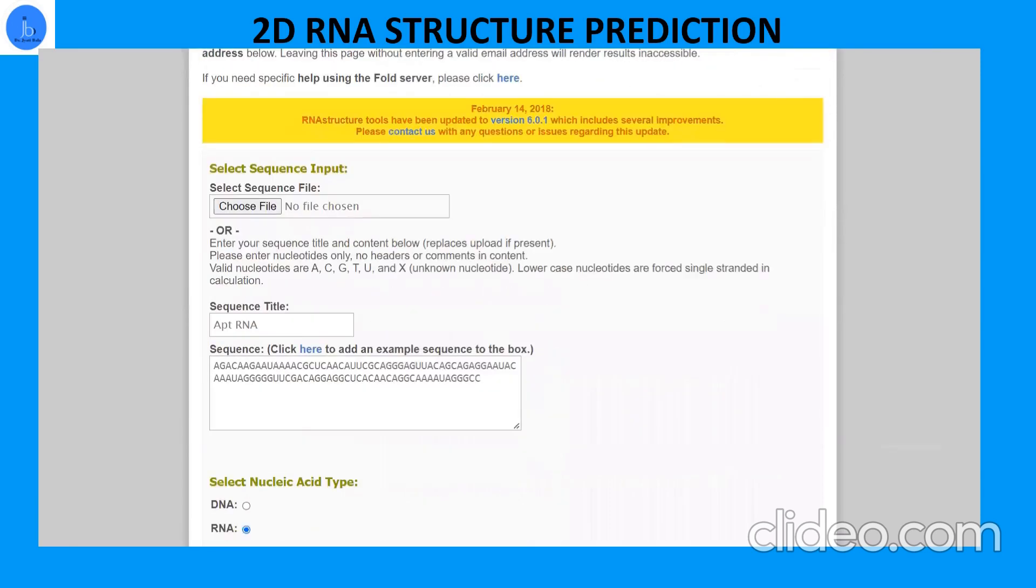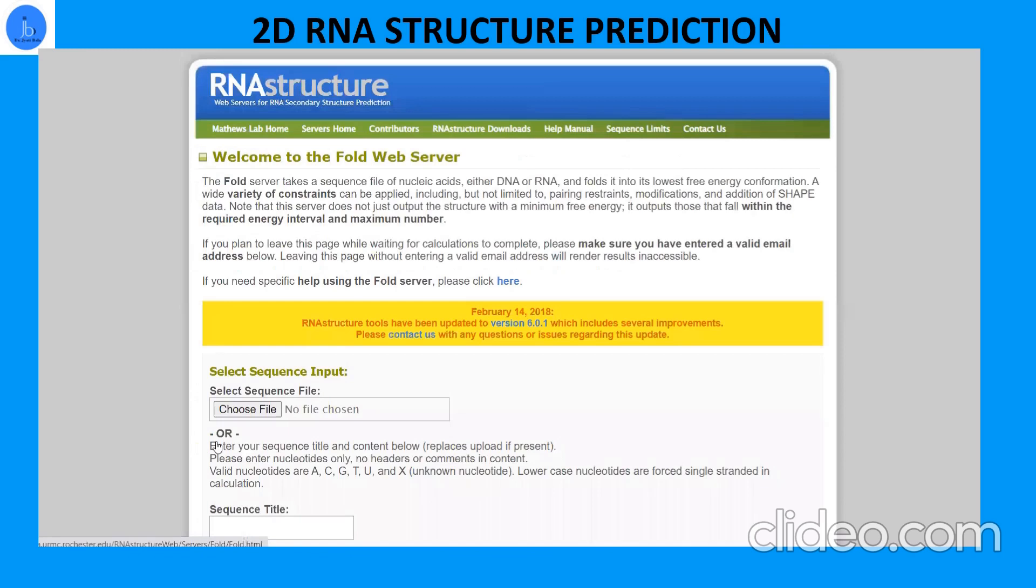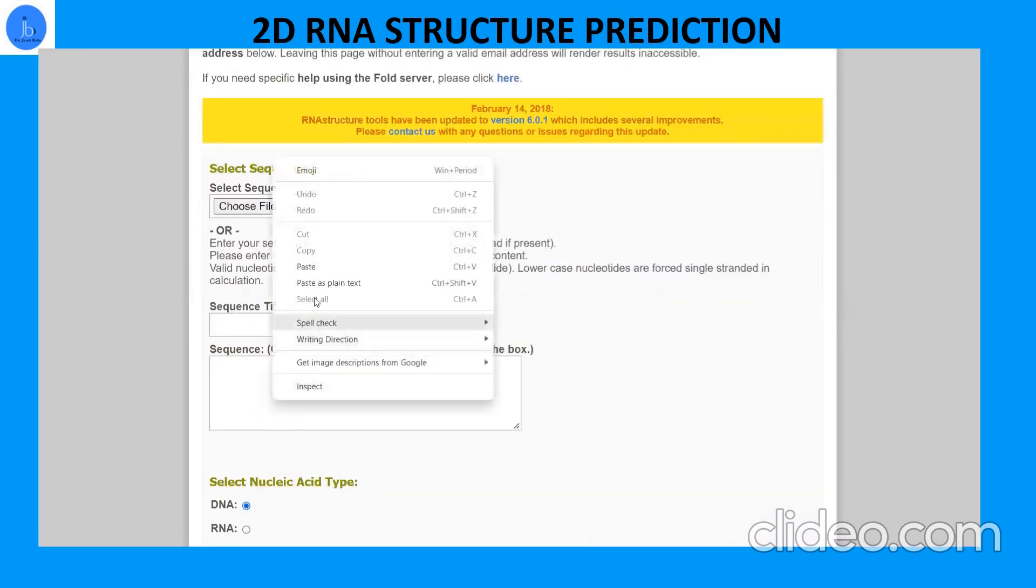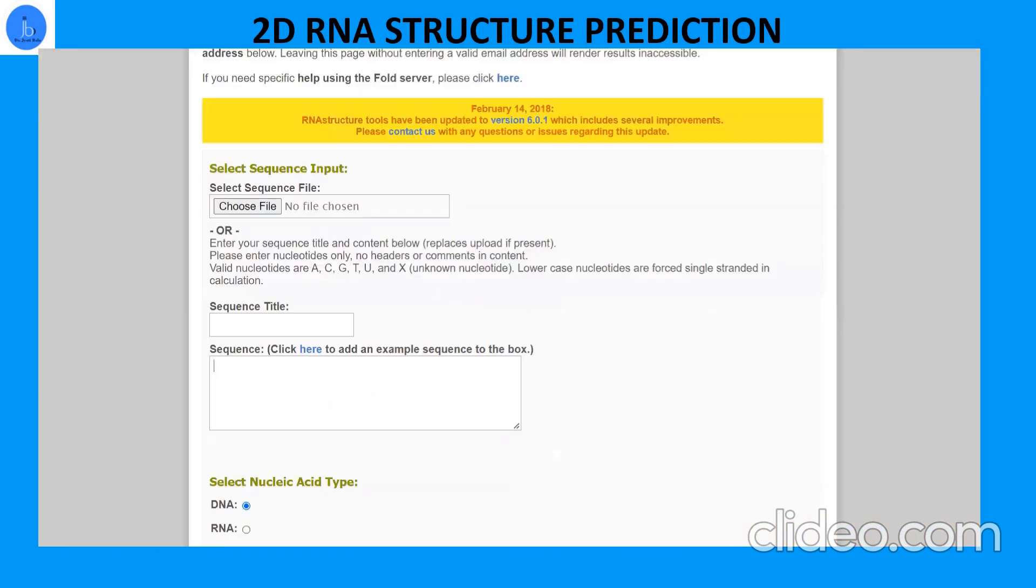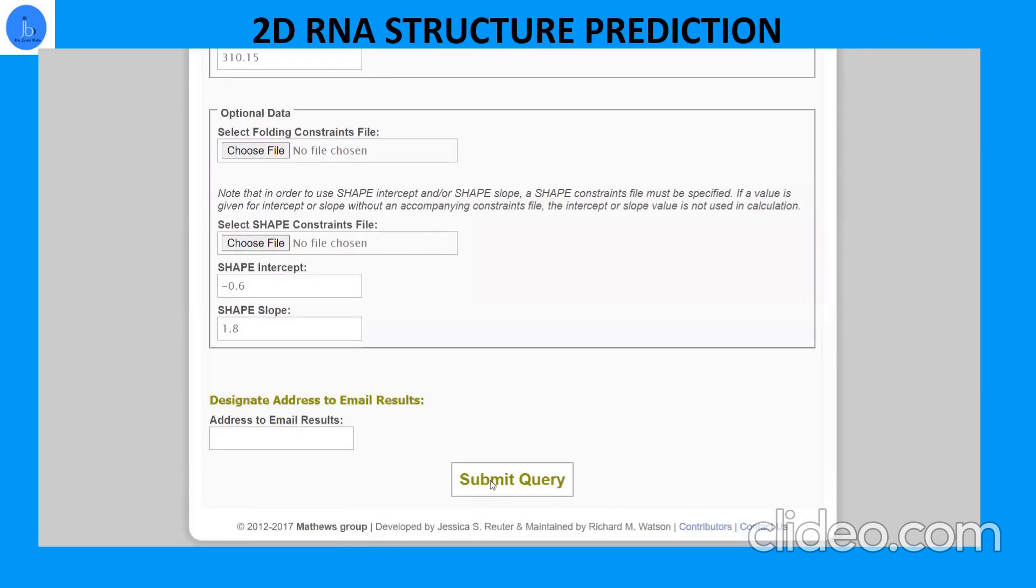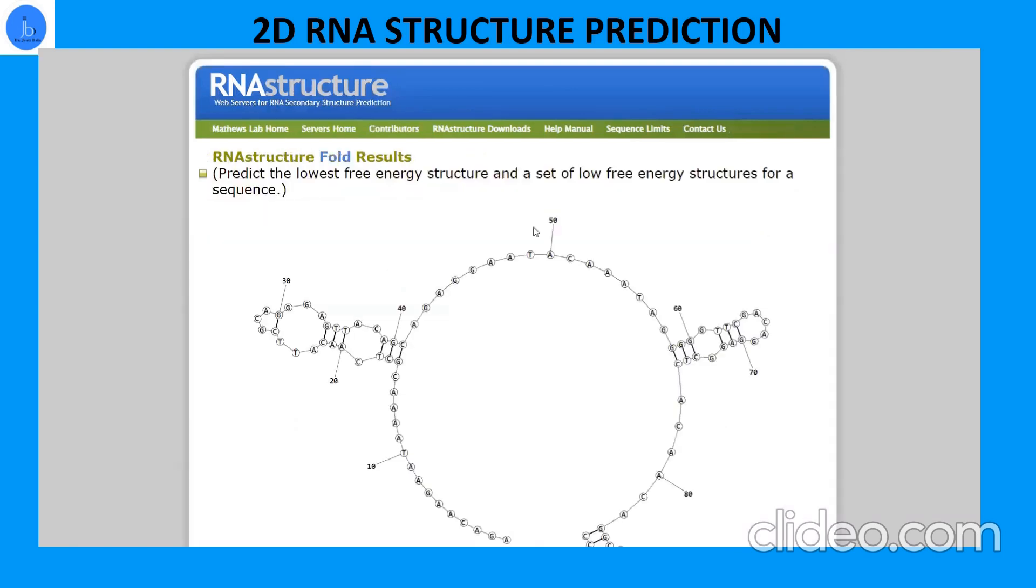If suppose you want to do for DNA purpose, then you just have to go to the fold. Instead of RNA, we just have to click on DNA and we have to provide a DNA sample. You can type the sample name and run in the similar version. So based on that, you are going to get your secondary structure result.